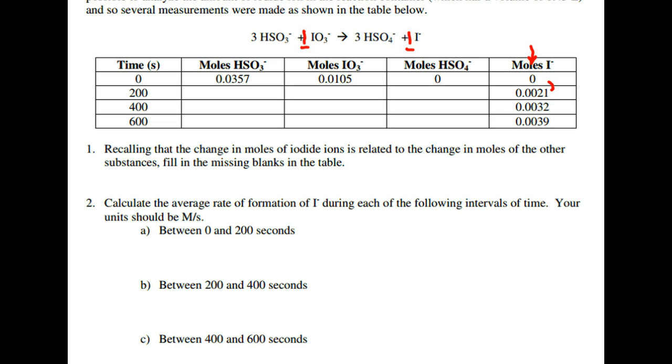The change between these two is 0.0021. So the coefficient for I minus, the ion for iodine is 1, and for HSO4 minus it is 3. So that means the change in is going to be 3 times as much. And remember that the products, the change goes up, and the reactants, the change goes down. So for HSO4, it should just be 3 times 0.0021 or 0.0063.